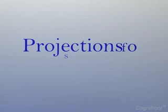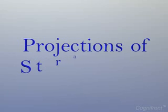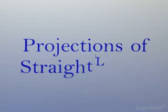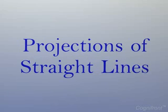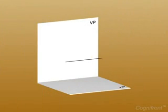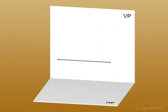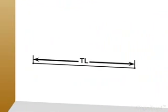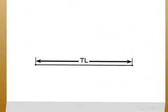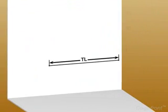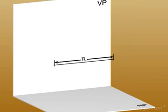Welcome. In this session we are going to study the projections of a straight line. A straight line is a one-dimensional element connecting two points by the shortest distance, and the length is always a true length (TL). The projection of a line can be obtained by drawing the projections of its end points on different planes.